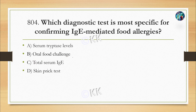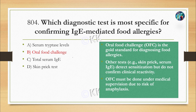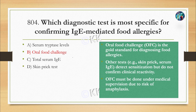Which diagnostic test is most specific for confirming IgE-mediated food allergies? Option A: serum tryptase levels. Option B: oral food challenge. Option C: total serum IgE. Option D: skin prick test. The correct option is Option B — oral food challenge. Oral food challenge is considered the gold standard for diagnosing food allergies. Other tests like skin prick test and serum IgE can detect sensitization, but cannot directly confirm whether the reaction is due to food or another condition. This test is performed under medical supervision because of the risk of anaphylaxis.